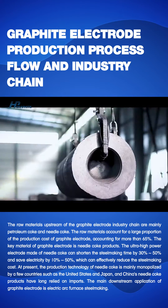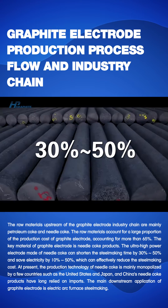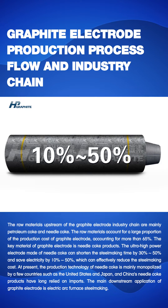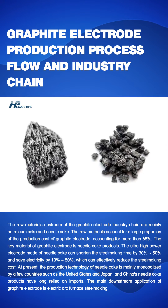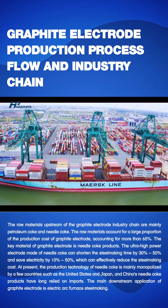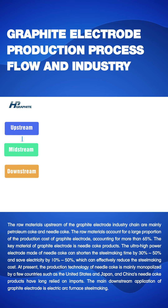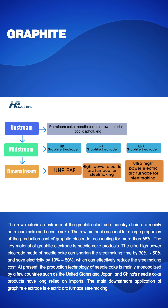The ultra-high power electrode made of needle coke can shorten the steelmaking time by 30%–50% and save electricity by 10%–50%, which can effectively reduce the steelmaking cost. At present, the production technology of needle coke is mainly monopolized by a few countries such as the United States and Japan, and China's needle coke products have long relied on imports. The main downstream application of graphite electrode is electric arc furnace steelmaking.